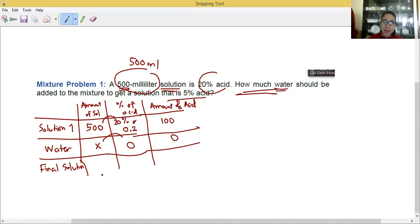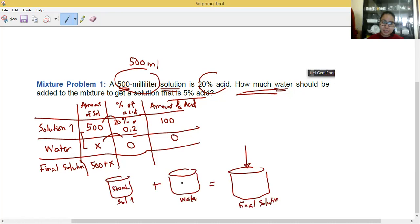How do we write our final solution? We need to add the two. So we will have 500 plus x. Why do you need to add the two? It looks like this one. You have solution 1, then you add water. If you add them both, then you will have our final solution. How do you know how much is inside? If this is 500 ml and this is x, you don't know how much water is there. So the final solution is you add 500 plus x.